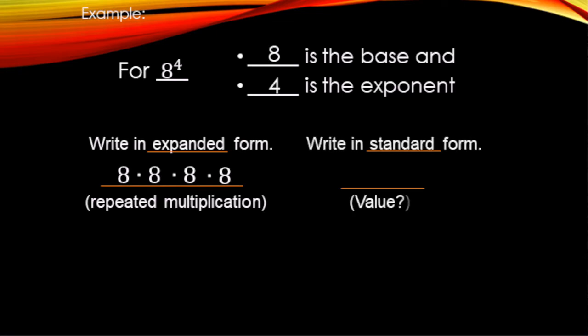If we want the standard form, we actually find the value. Using a calculator for four 8s multiplied, 8 to the fourth power equals 4,096.